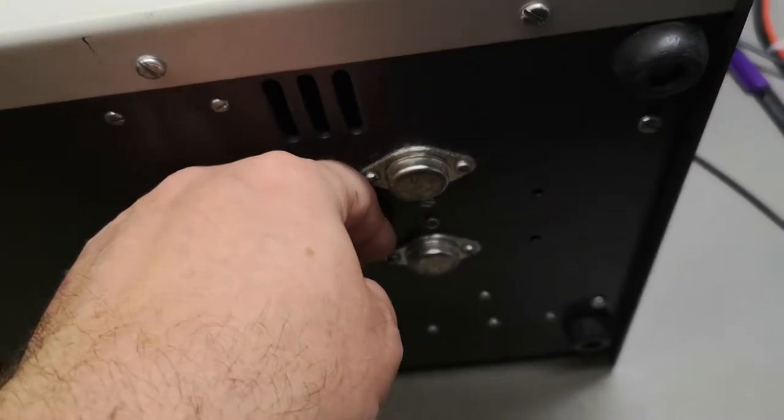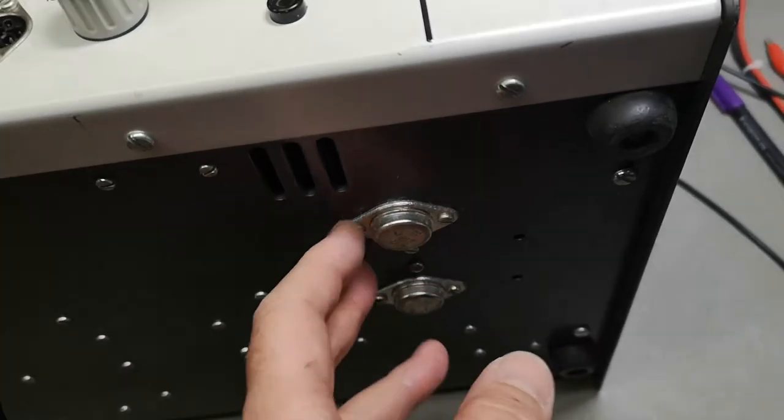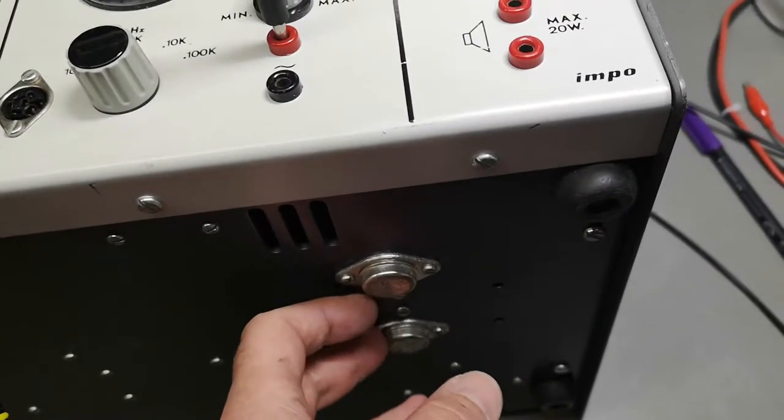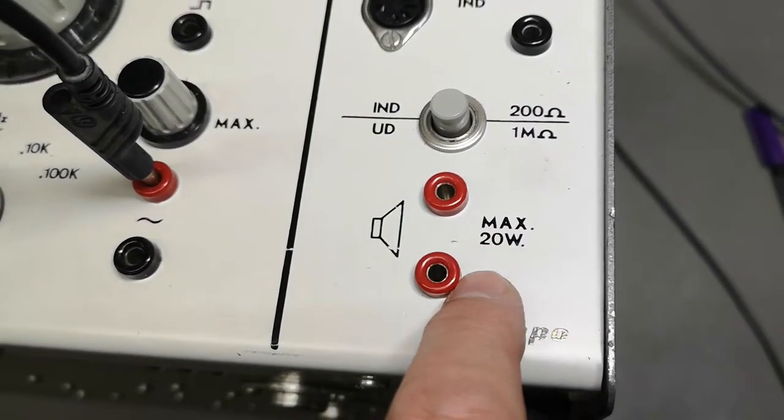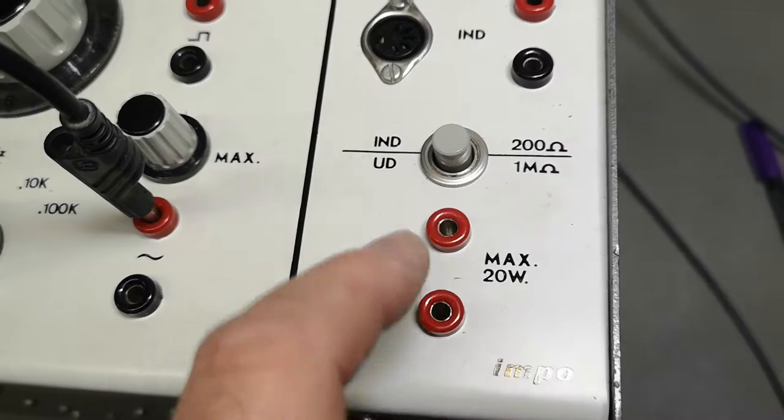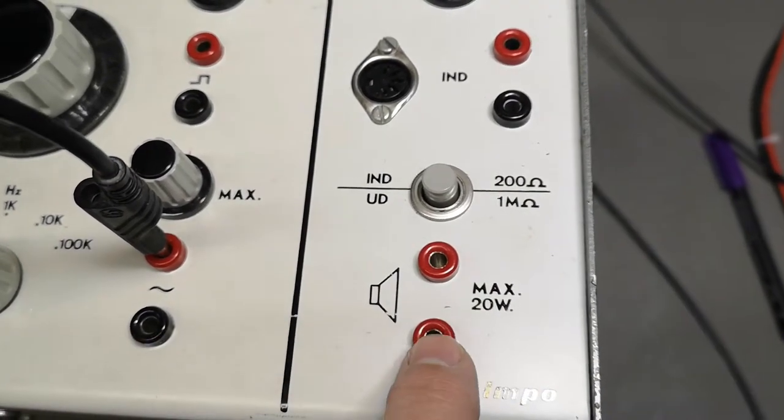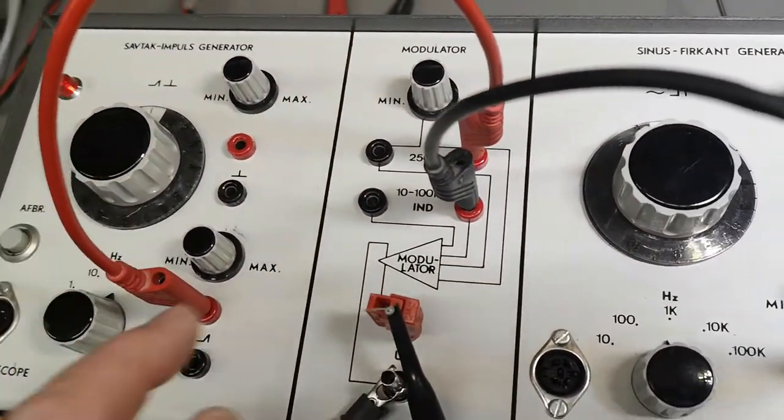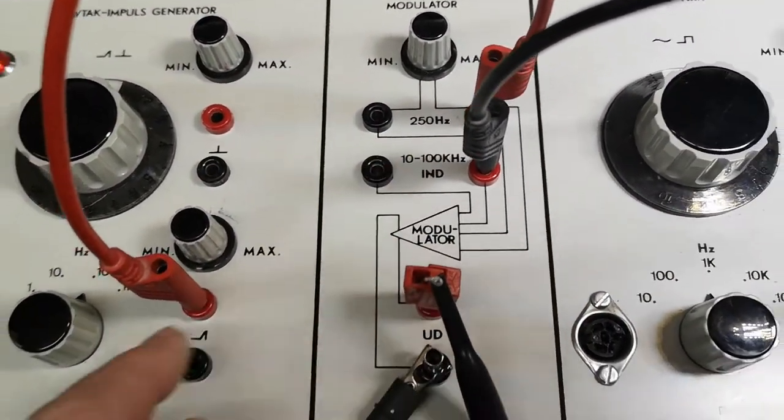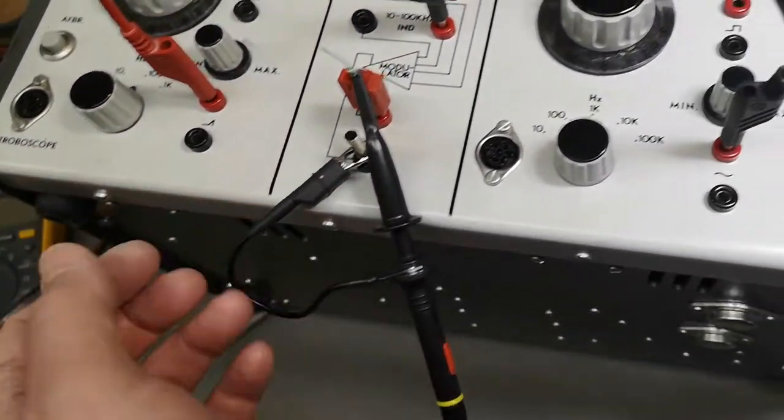It does run a little bit warm here around the 2N3055s. I guess those will be related to this output amplifier. I'm also a little bit worried about the DC voltage here, because this one actually should have been black, because all black connectors they're connected together.